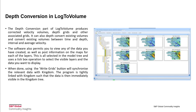This is all selected in the model tree and uses a tick box operation to select the visible layers and the data you want to display. When you've completed the operation, using the write grids button, this will synchronize the relevant data with Kingdom. The program is tightly linked with Kingdom such that the data is then immediately visible in the Kingdom tree.